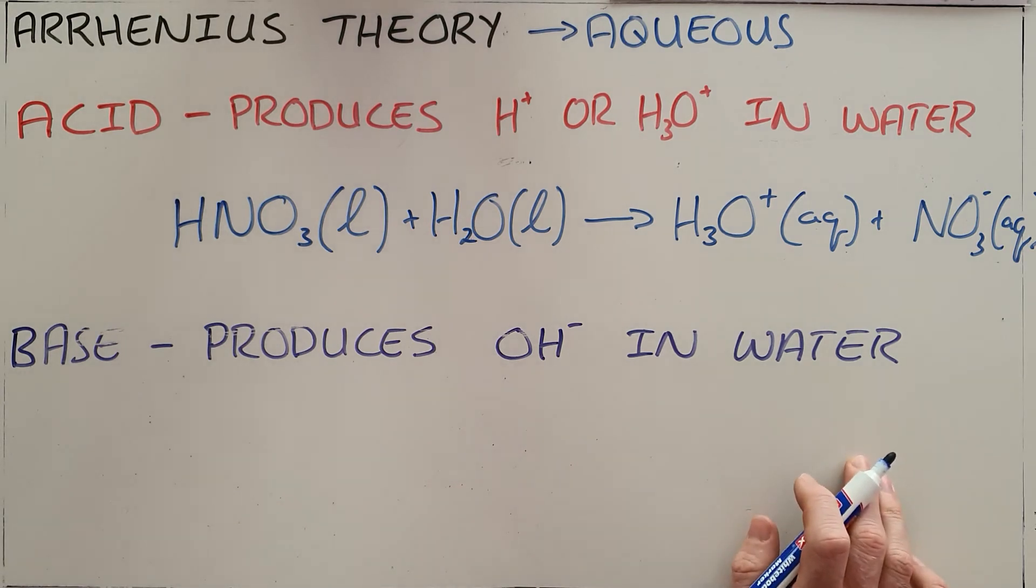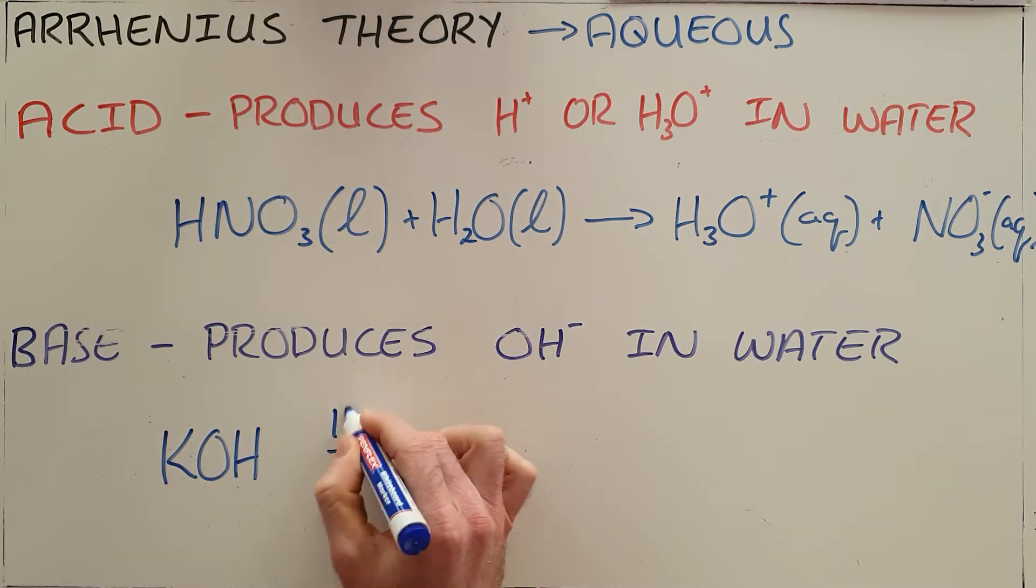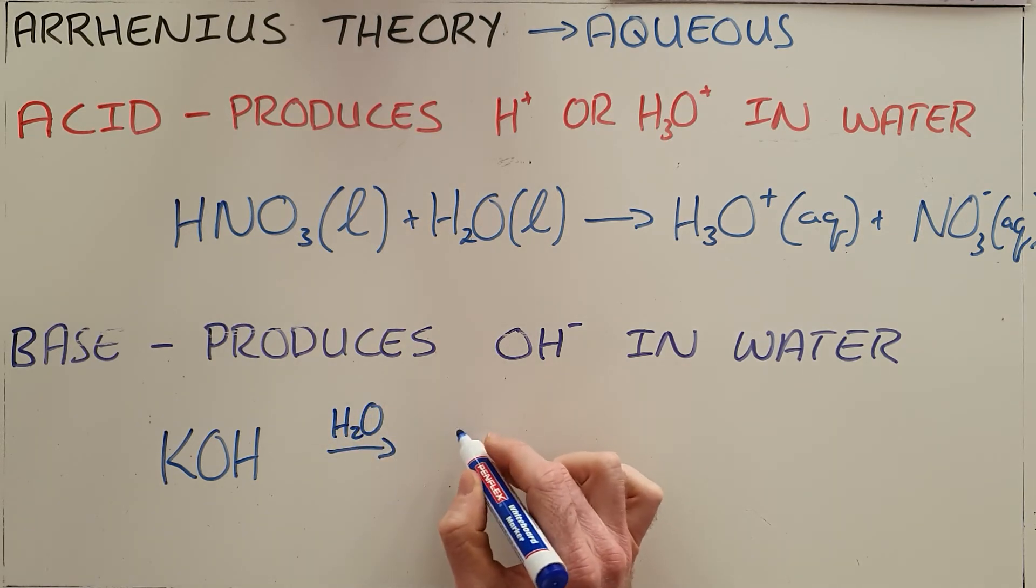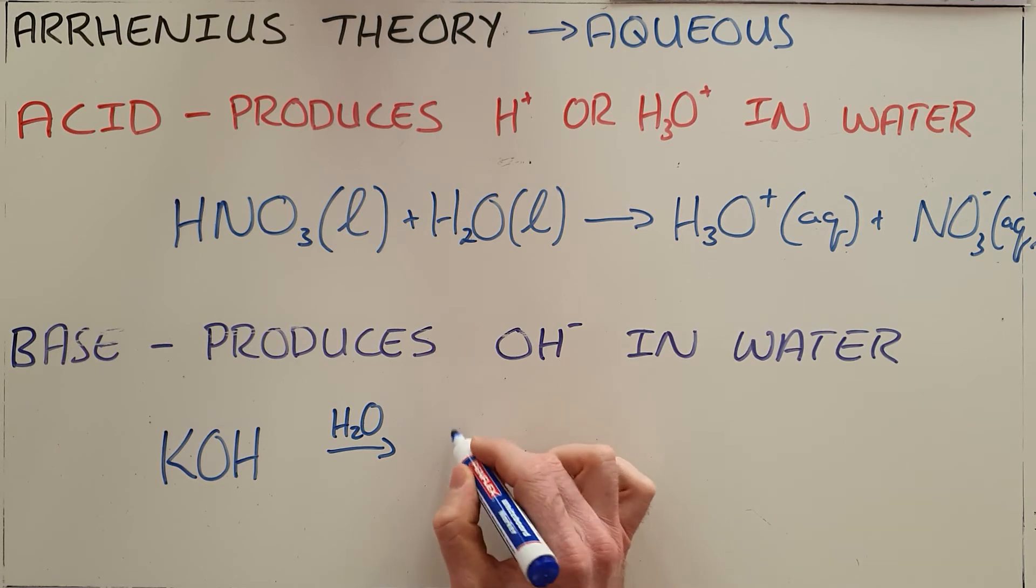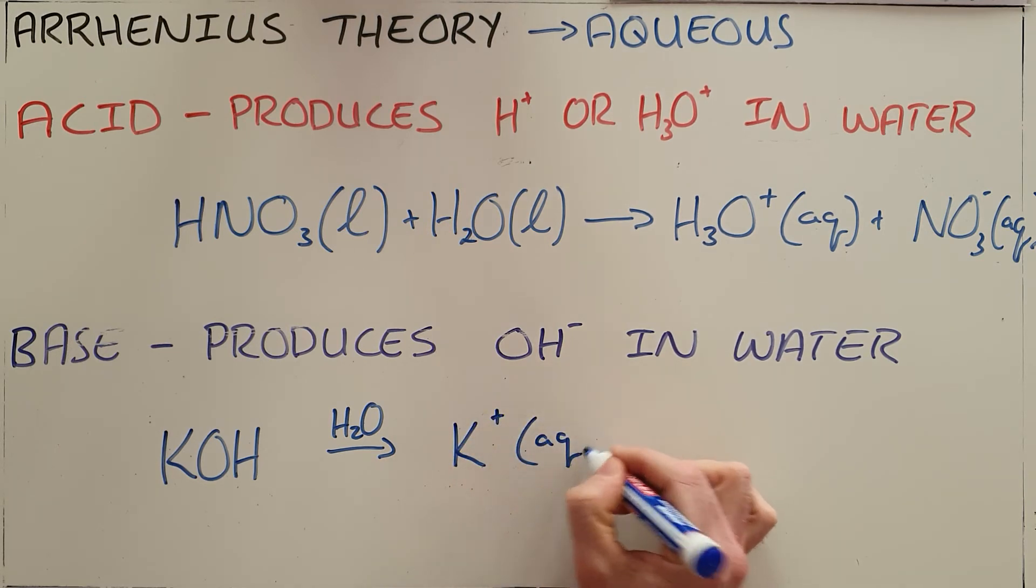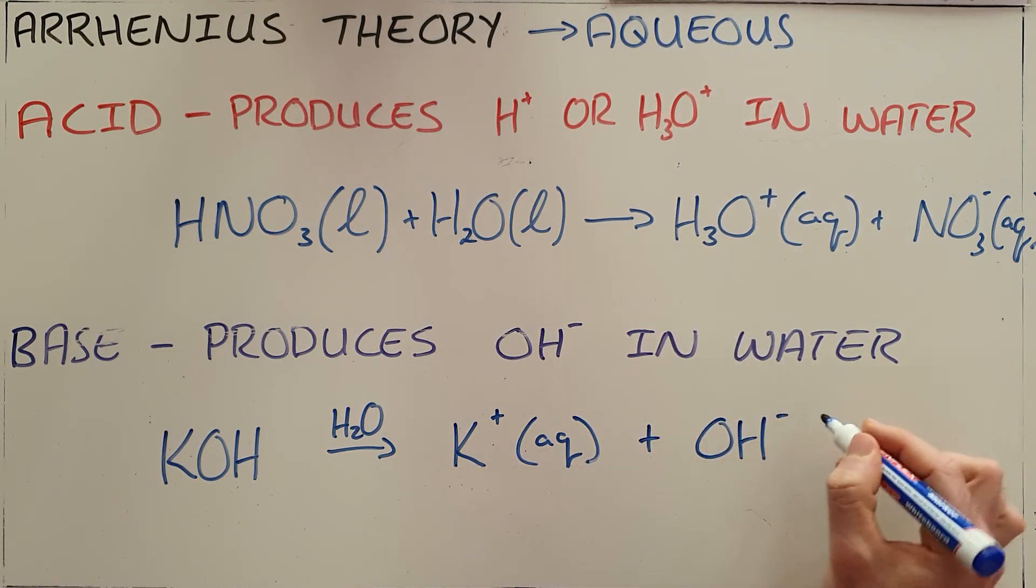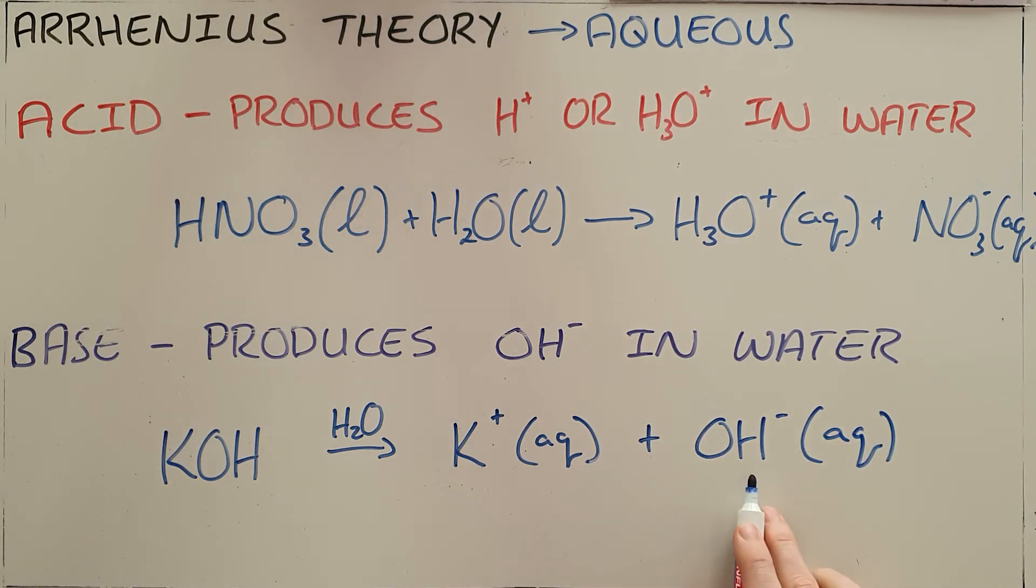So if we take one of our common strong bases and we place that in water, we know that when potassium hydroxide is placed in water, it will dissociate. And dissociation we know is not a reaction, but where a compound breaks into its constituent ions to produce potassium ions and hydroxide ions both in aqueous solution.